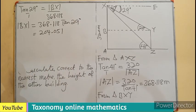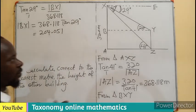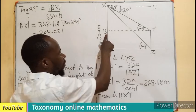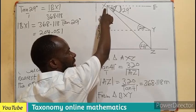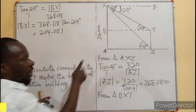Don't forget this is in degrees. We have now found BX, but we are looking for AB.